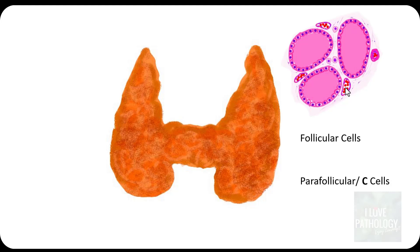Why are they called C cells? Because these cells secrete Calcitonin, a very important hormone that maintains calcium homeostasis. That is the reason why these parafollicular cells are referred to as C cells.